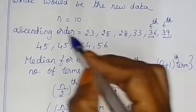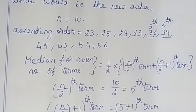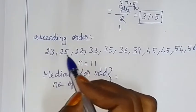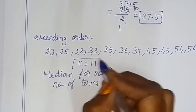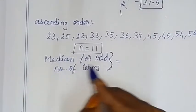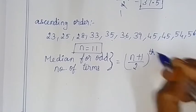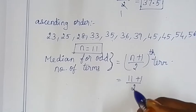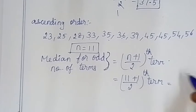In the ascending order, 35 is included between 33 and 36. The new ascending order has 11 terms, which is an odd number. So use the formula: Median = ((N+1)/2)th term.